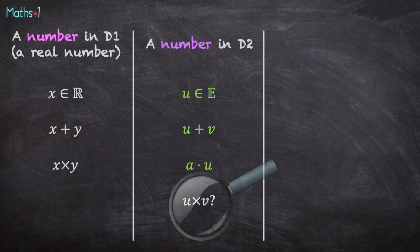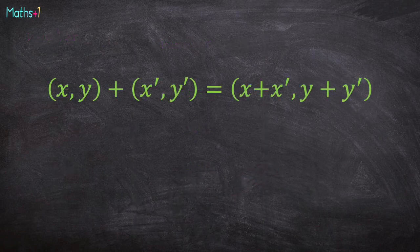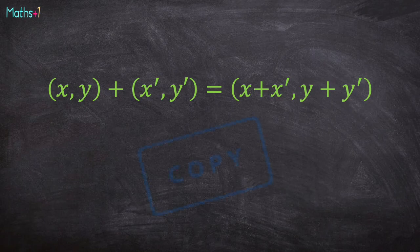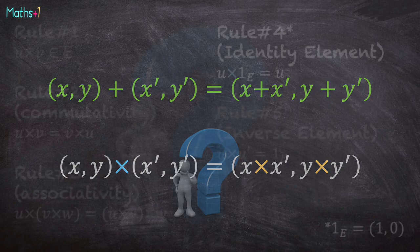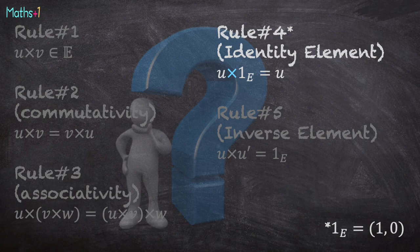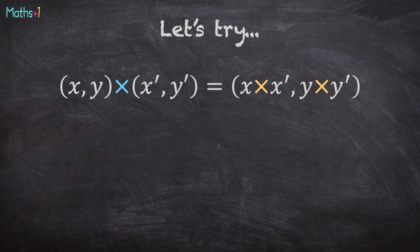What does it mean u times v? We have defined the formula for the addition. We could copy the formula for the multiplication and we could say that (x, y) times (x', y') is (x times x', y times y'). A good idea? Well, let's focus on rule number 4, the identity element rule. This rule says that u times 1 should be u, with 1 is (1, 0). Well, let's try. (x, y) times (x', y') is supposed to be (x times x', y times y'). Let's try.